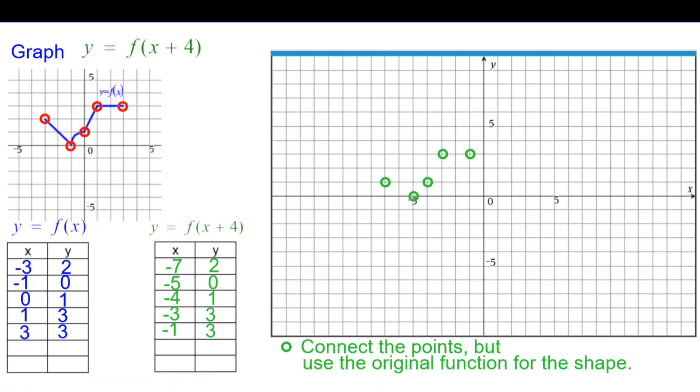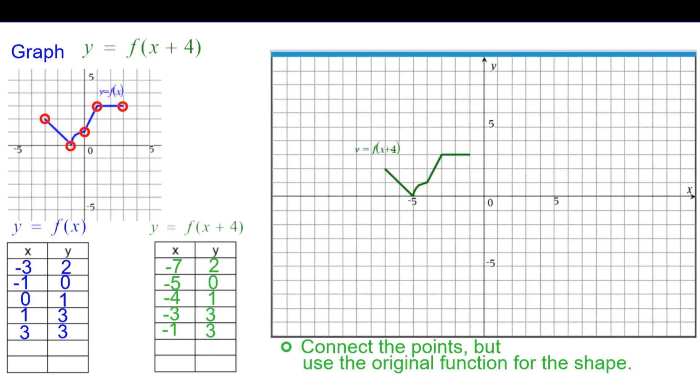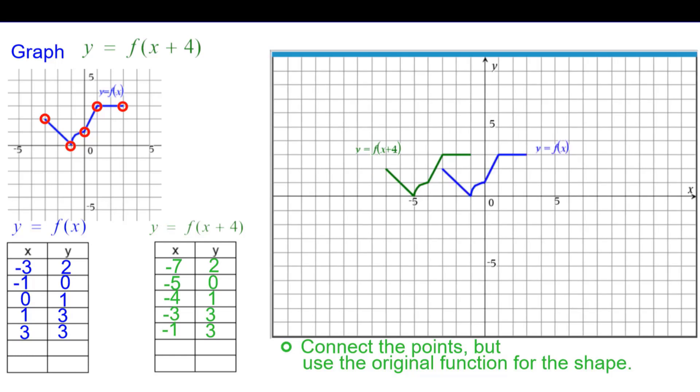So now we'll connect the points, but remember to use the original function for the shape, segments and curves and so on. So this is our graph y equals f of the quantity x plus 4. And when we compare it to the parent graph, we can see that each point from blue to green is shifted to the left 4 units.